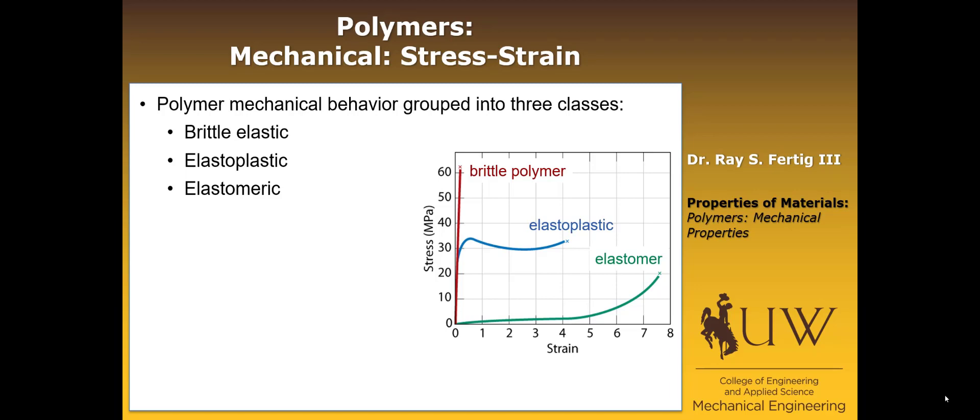One thing to note as you look at this graph is that the strains go from 100% strain, 200% strain, so very different than what you expect in metals, but also lower stresses than you expect in metals. So just to kind of locate polymers for you in terms of where their properties lie.